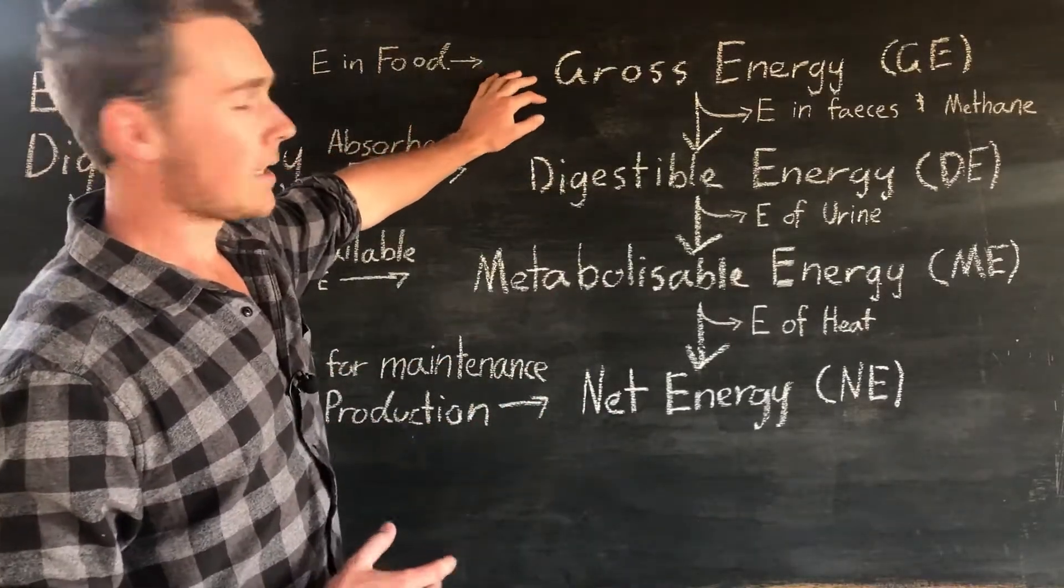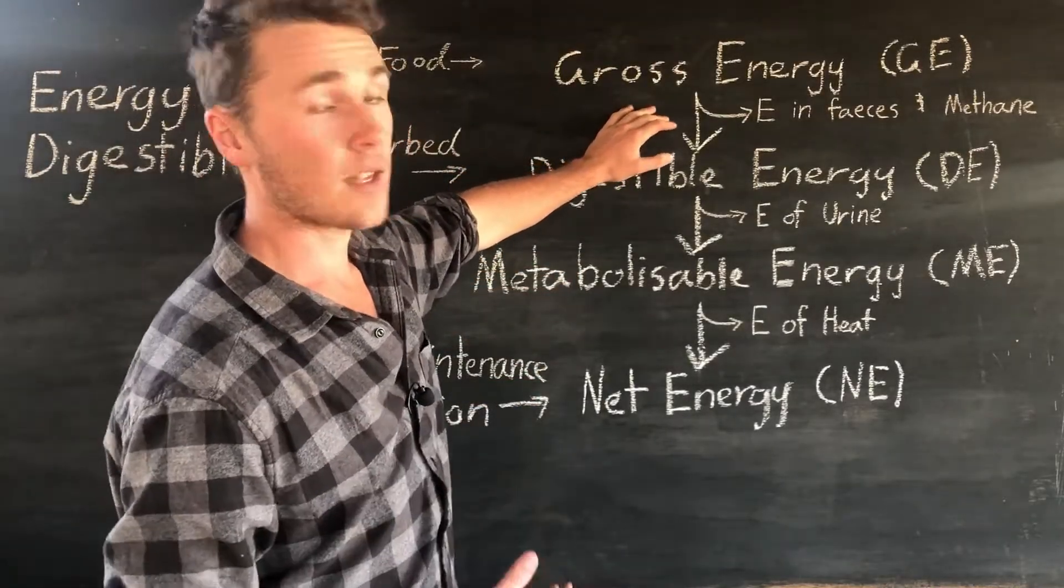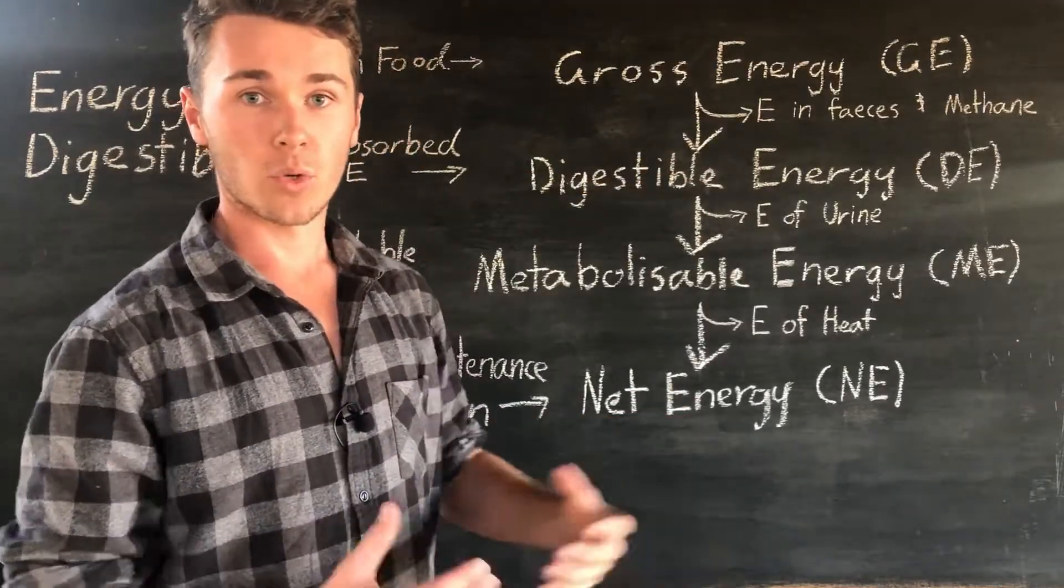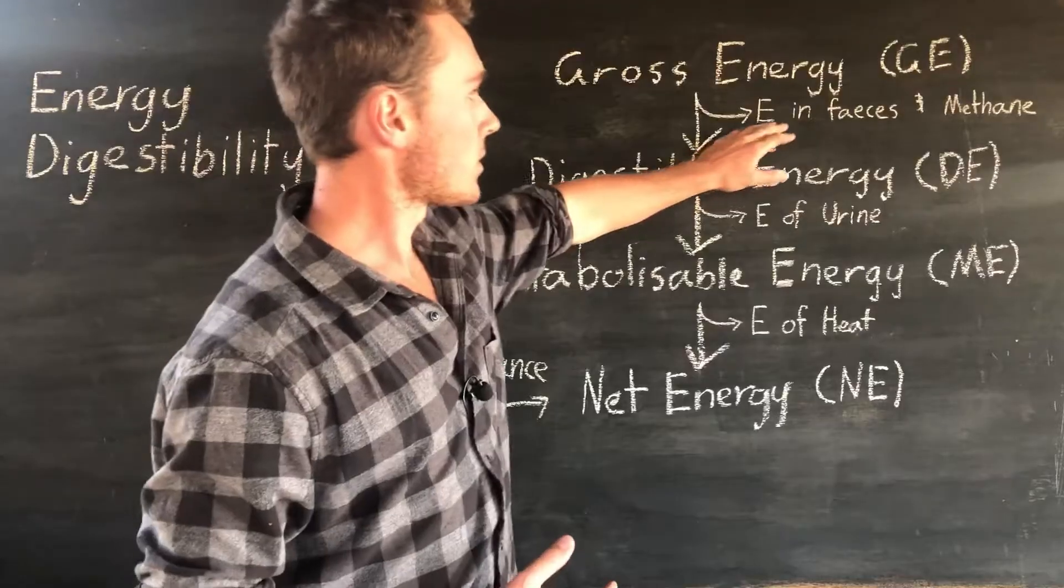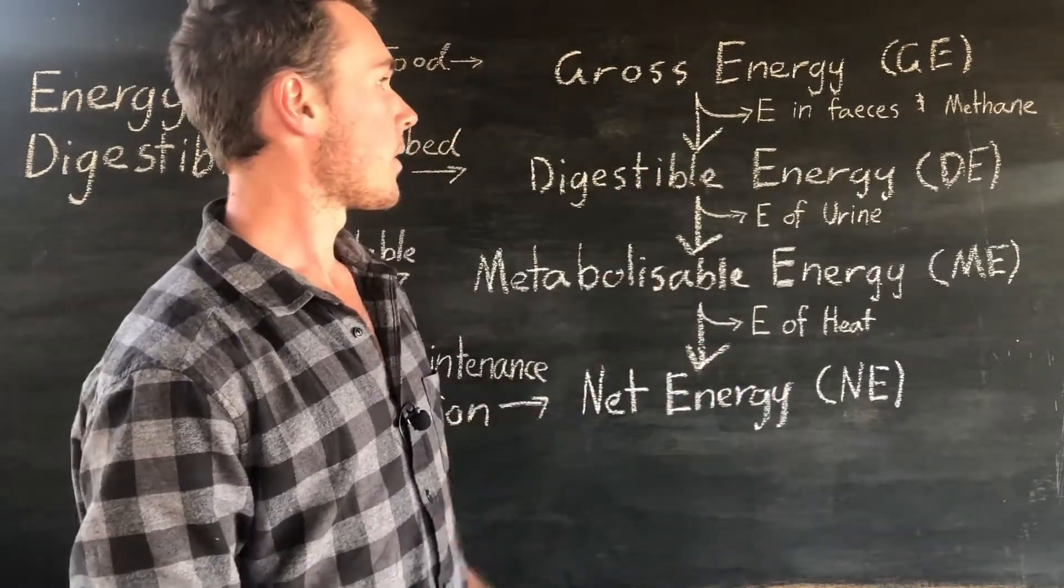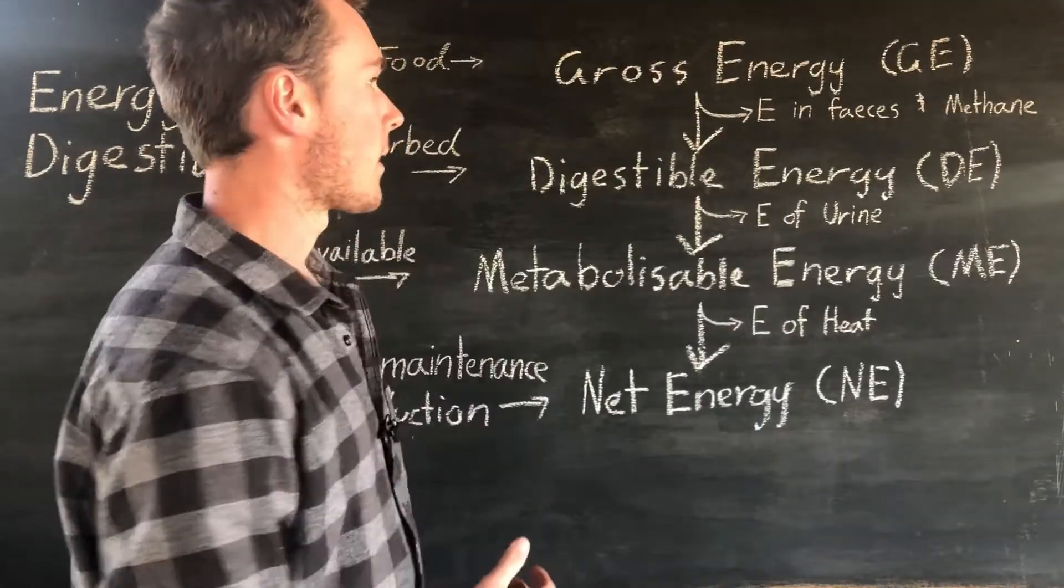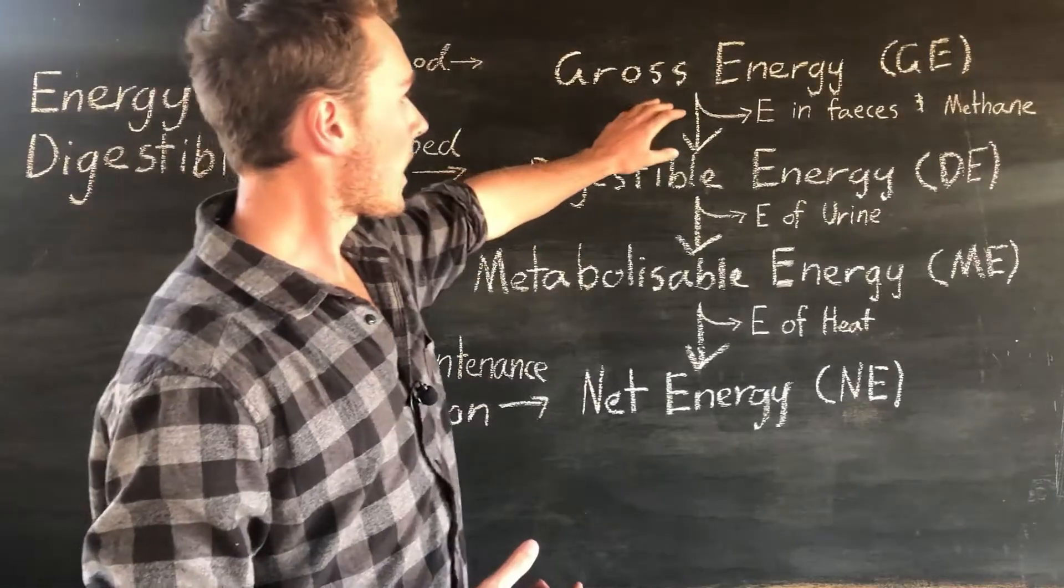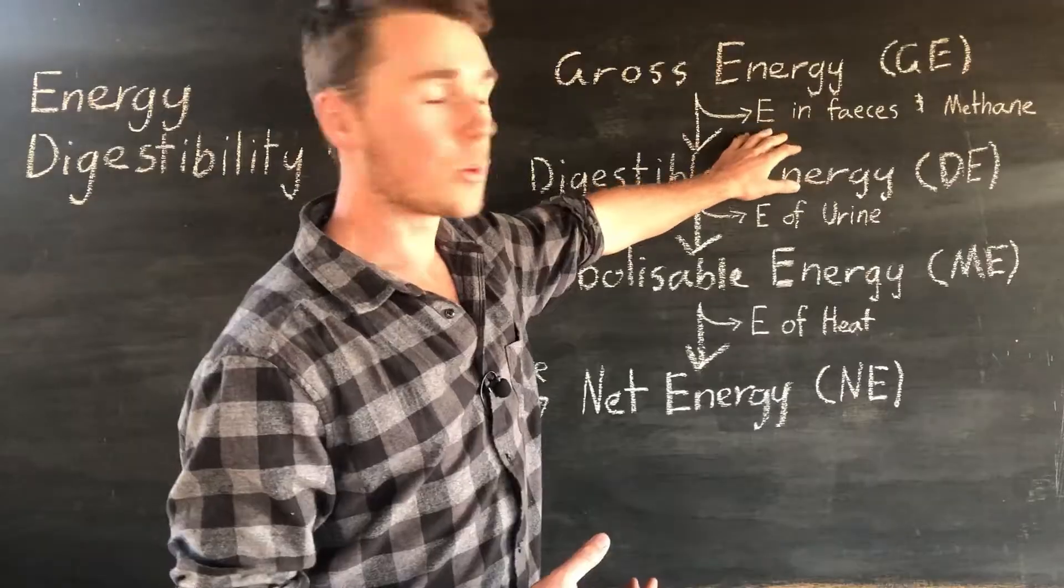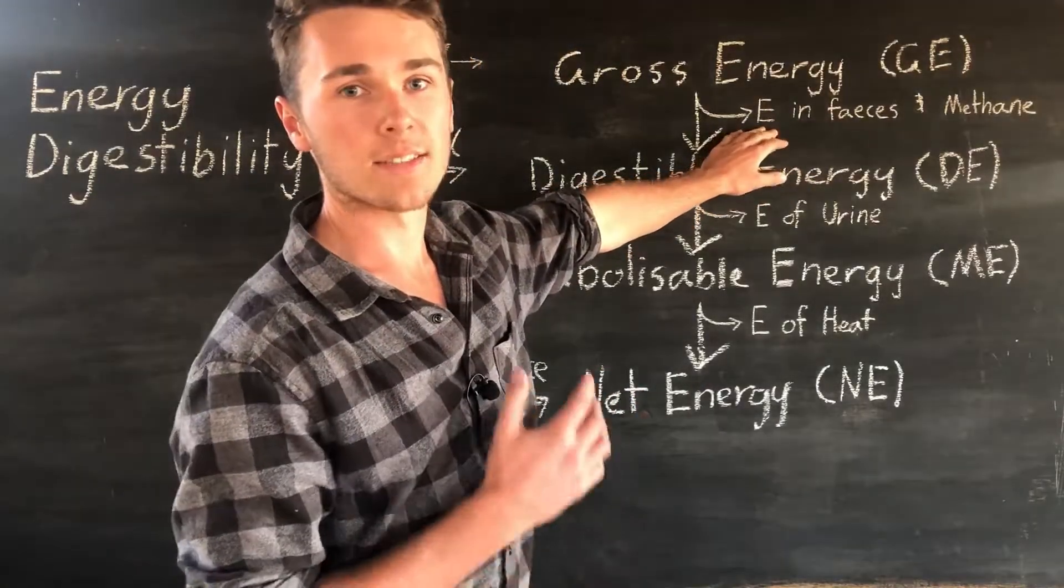So from here the animal will eat it, it goes into their stomach. Some of the energy will get absorbed, but then some will still remain in the plant matter and will be passed out in feces. And for a ruminating animal, it'll get burped out as methane. So right here we have, our total amount of energy or gross energy, we lose some through feces and methane. So this energy is a loss to the system.